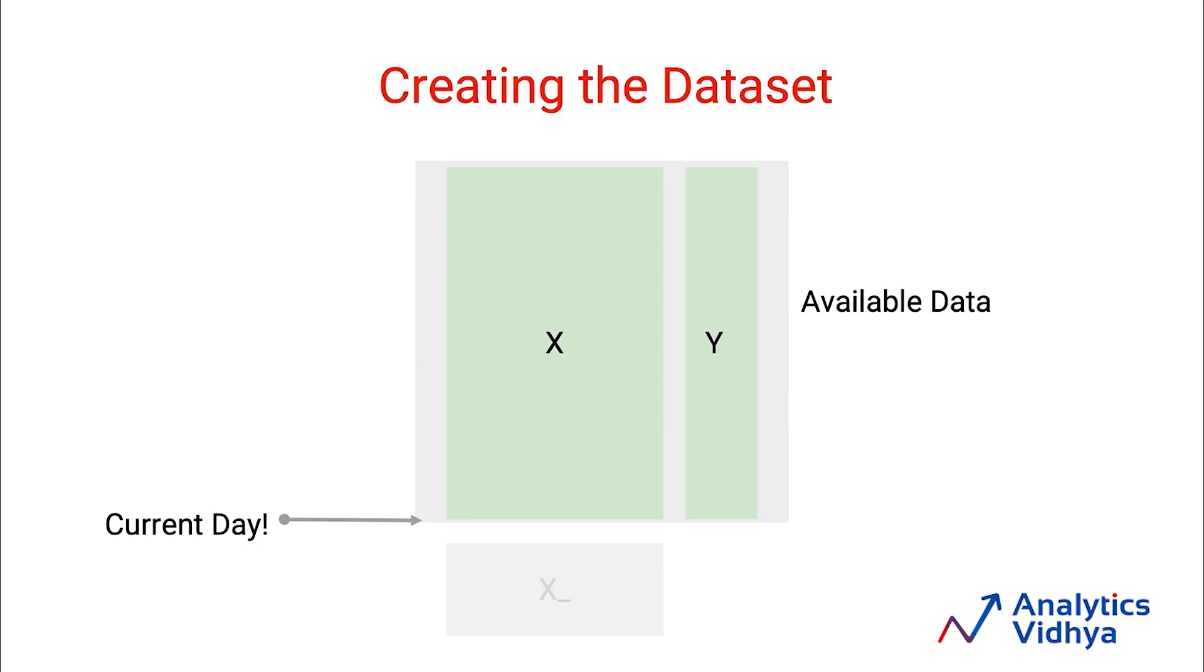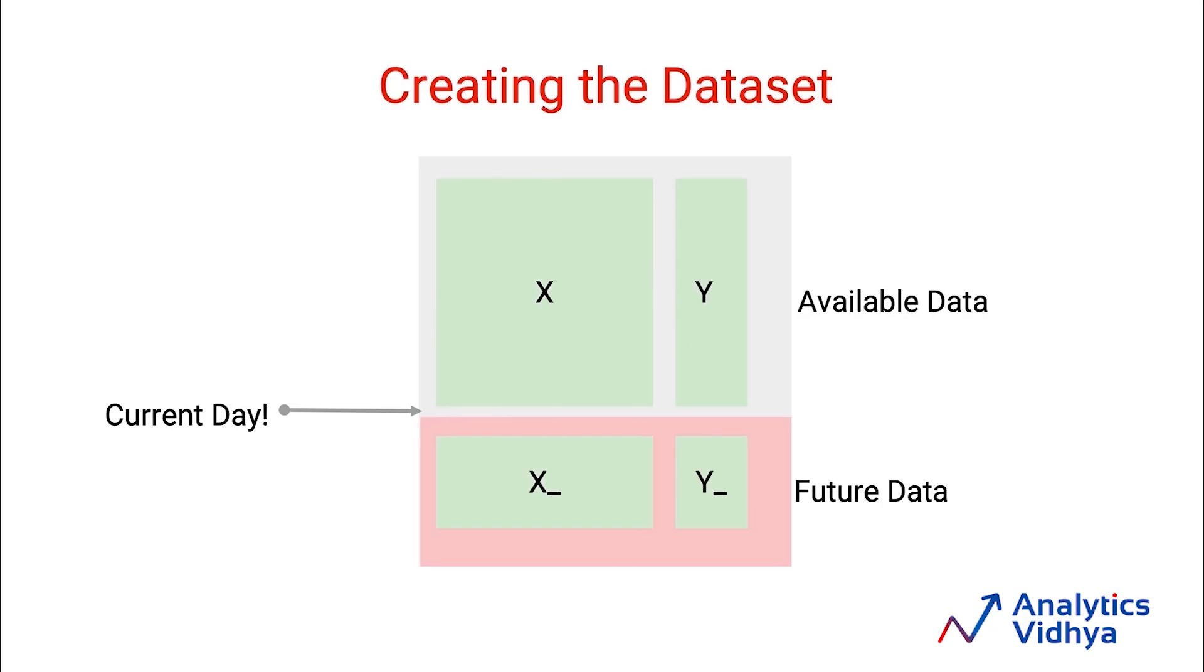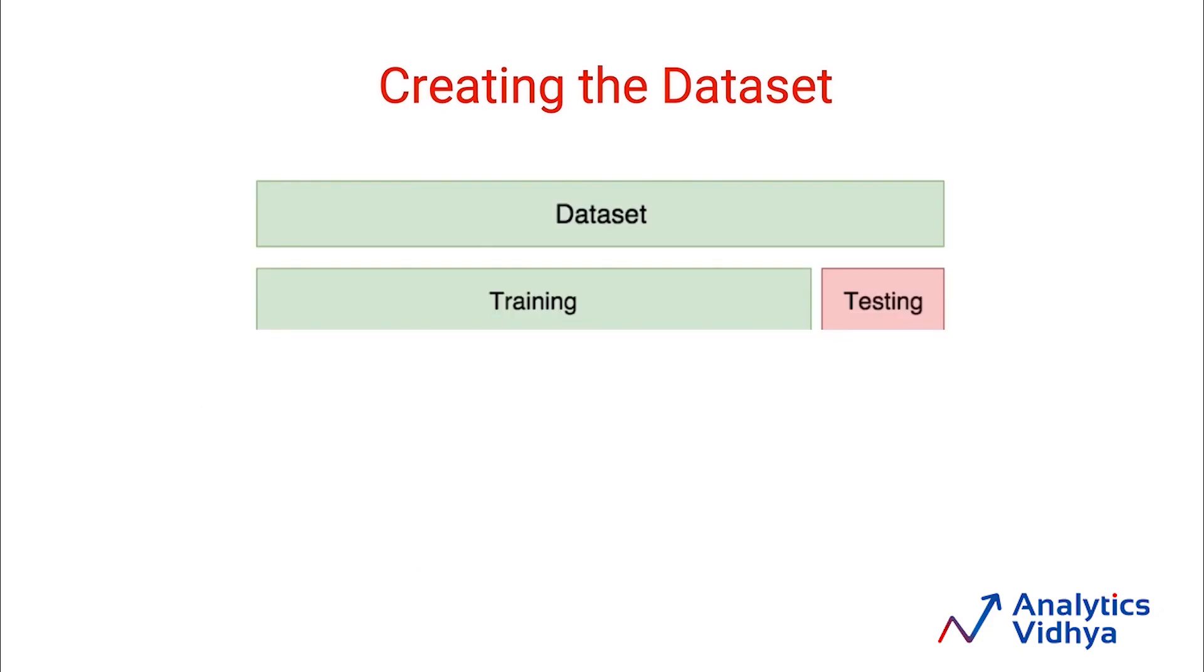If I use the entire data to build my model, I will not be able to see whether I can predict my future values in the right manner. So I go back to my current dataset and either divide it randomly or, in case of time-dependent variables, I move the current day to one of the days in the past. I assume that the data between the hypothetical current day and the current day is actually my future data. Now I'll train my data on X and Y and test it on X dash. This is my training data and this is my test data.